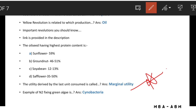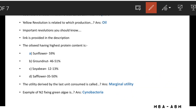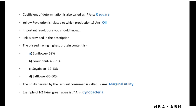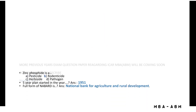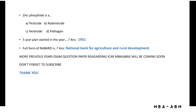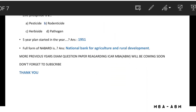An example of N₂-fixing green algae is cyanobacteria, also known as blue-green algae. Zinc phosphate is a golden oxide.